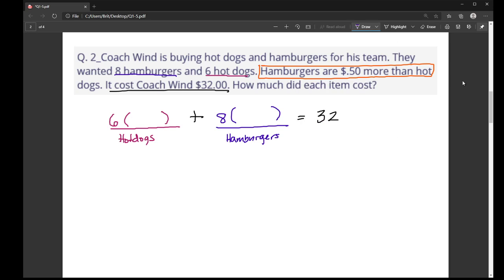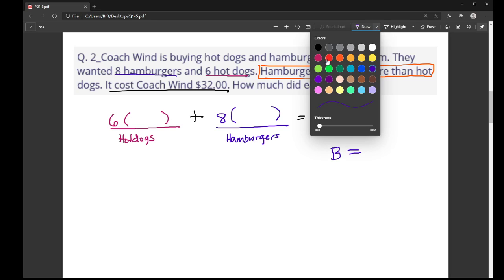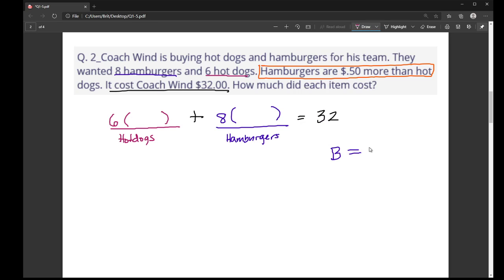This says that hamburgers, I'm going to call those B for burgers. It says they equal $0.50 more than hot dogs. So if I take the hot dogs, I'm going to use a D for dog, and I add $0.50 to it, it will equal a hamburger. So where the hot dogs are, I could put the letter D, because that stands for hot dogs. But for the hamburgers, I'm going to put this expression, D plus $0.50.